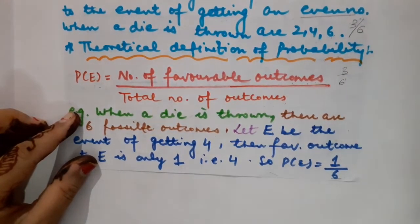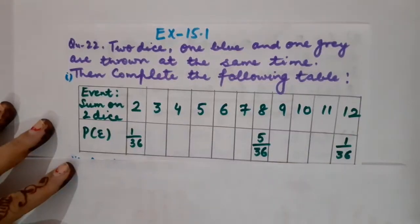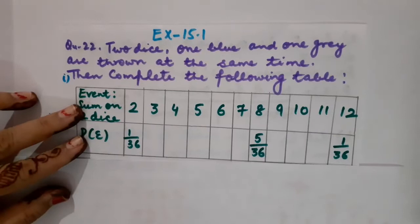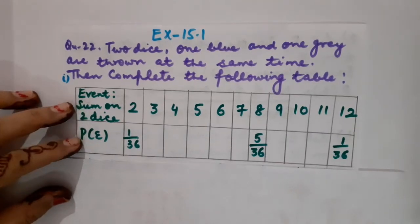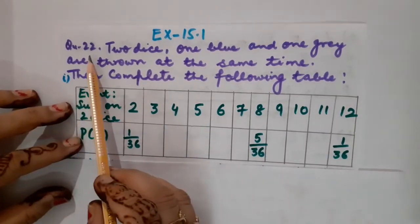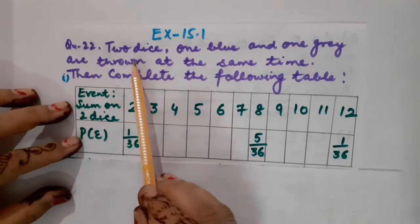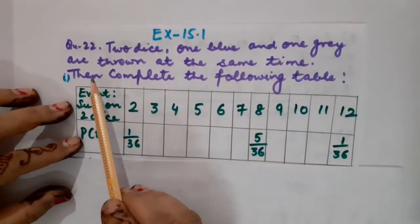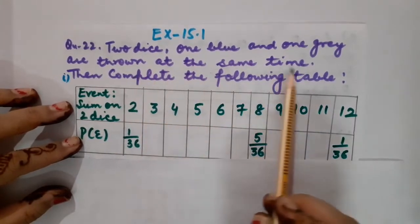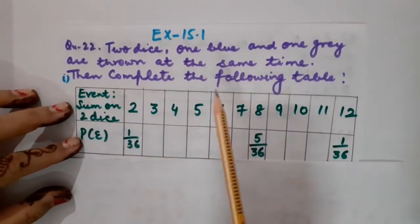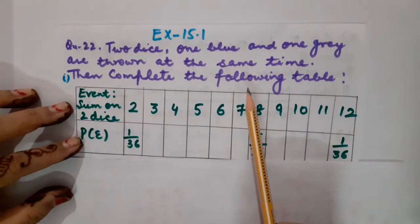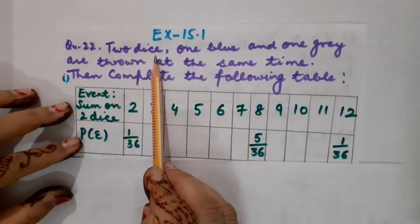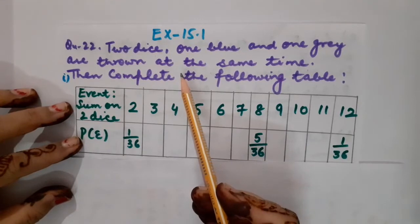Let us start today's lecture with the theoretical definition of probability. The probability of an event is equal to the number of favorable outcomes upon the total number of outcomes. This is the theoretical definition of probability, and we can also call it the formula to calculate probability for different events. Now, here is the very first situational problem from Exercise 15.1 — Question 22. Two dice, one blue and one grey, are thrown at the same time.